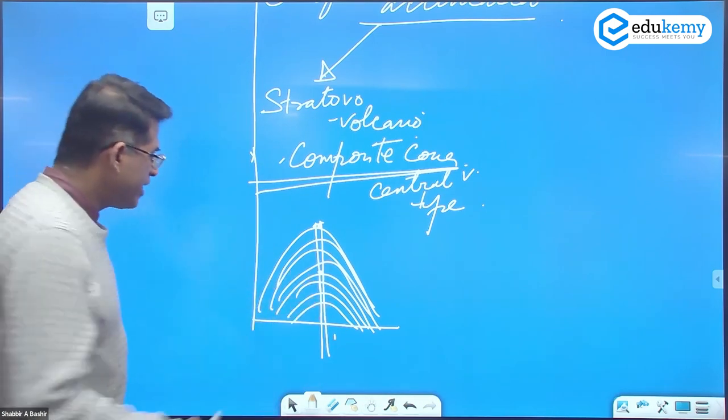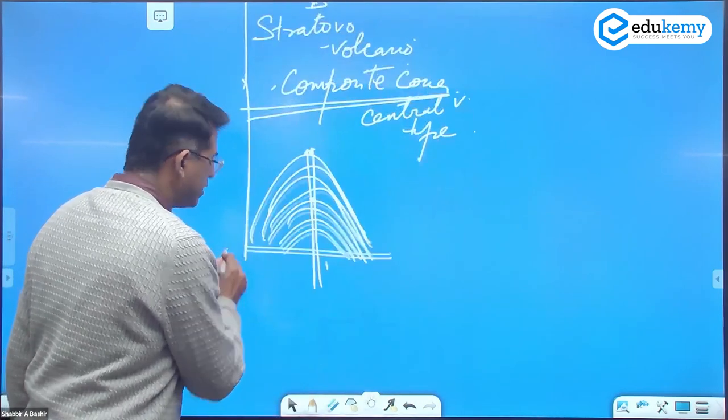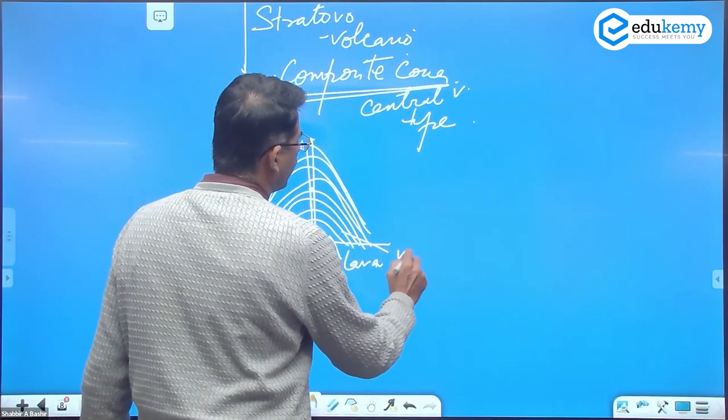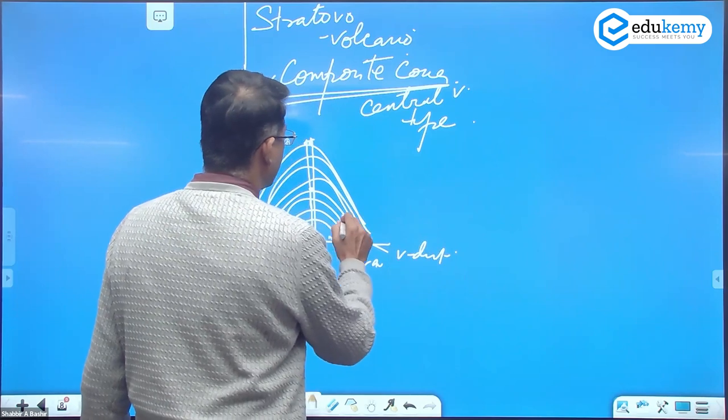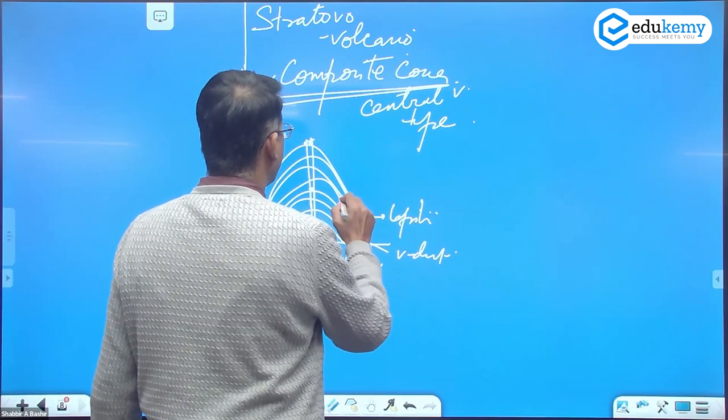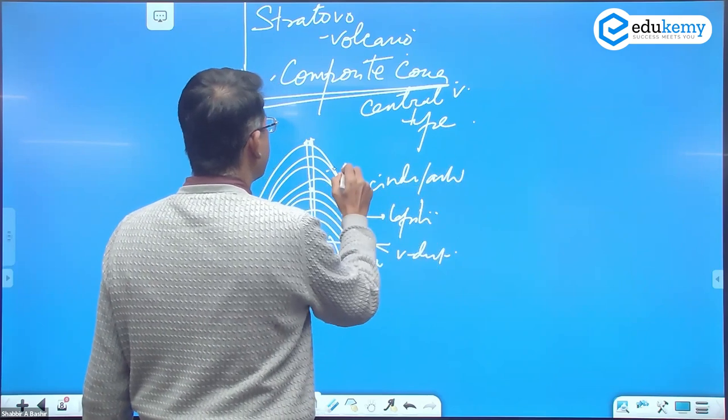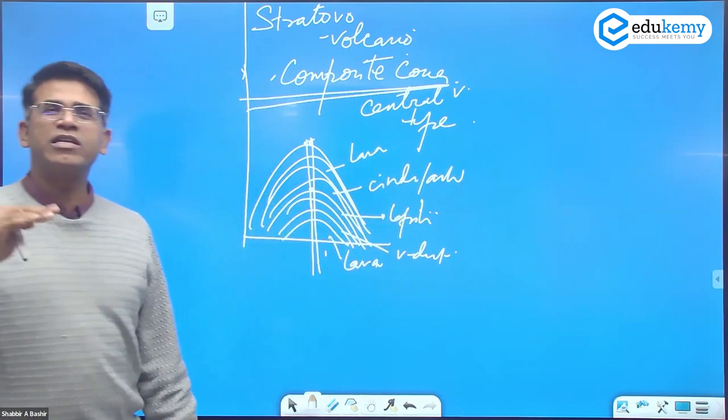So yeh layers kya hoota hai. These layers will have lava, this layer will have volcanic dust, the layers will have lapilli, the layers will have a cinder or ash, again a layer of lava. There are different type of layers in terms of the composition.